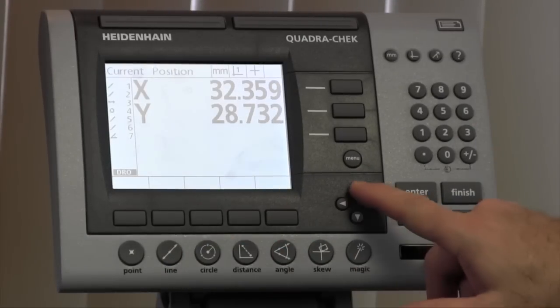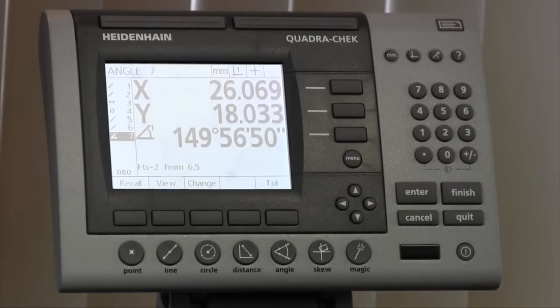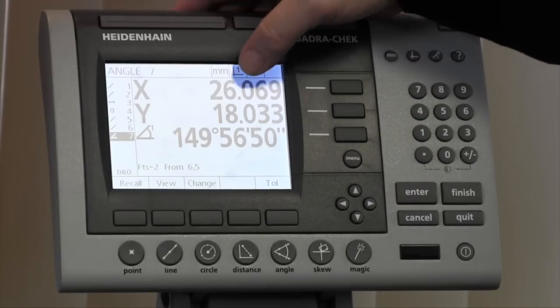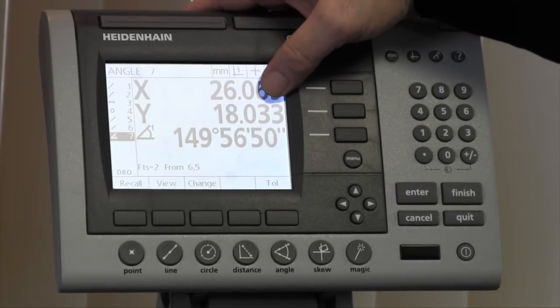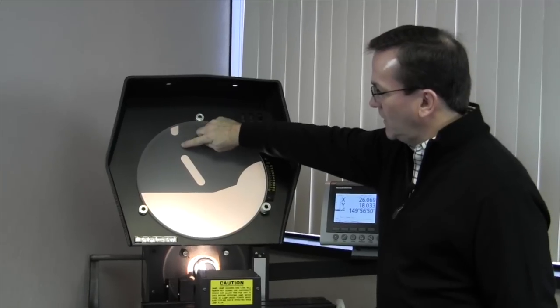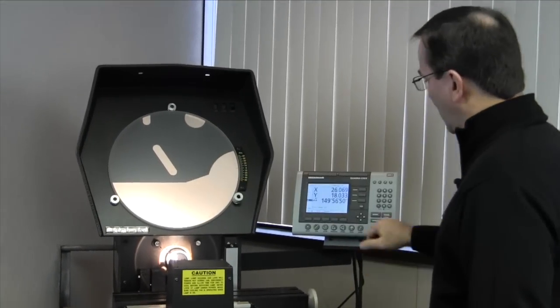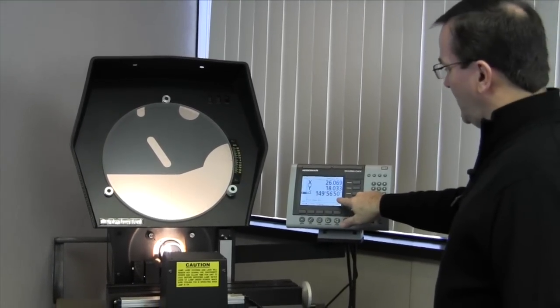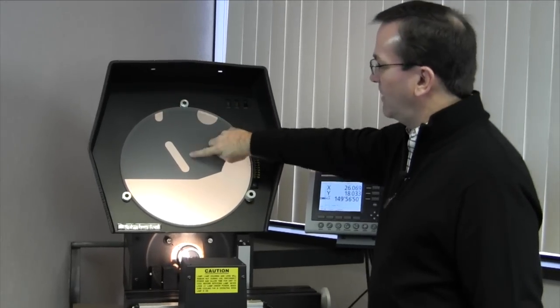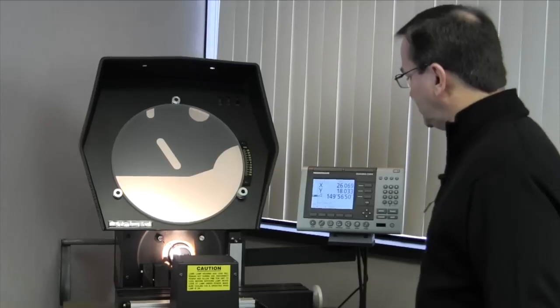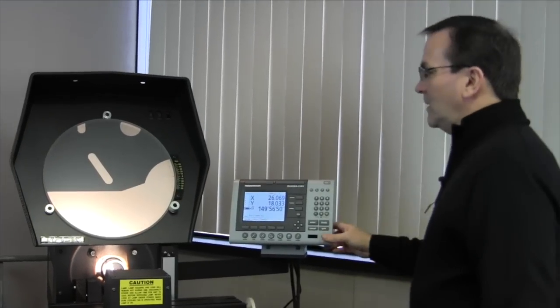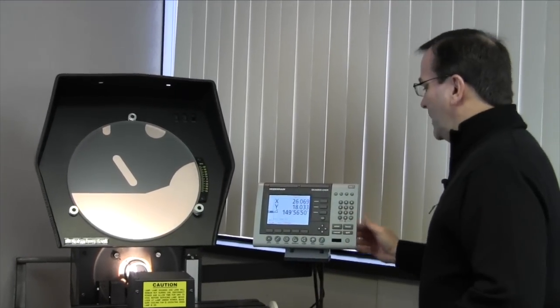Whoops. One too many button pushes there, folks. So this is the theoretical intersection of those two lines relative to our zero point. And it's 149 degrees, 56 minutes between the two lines. So that's the simple angle measurement.